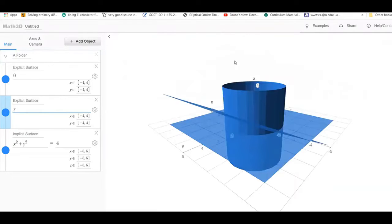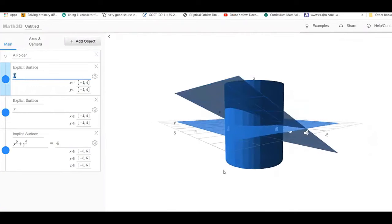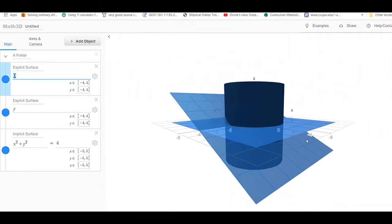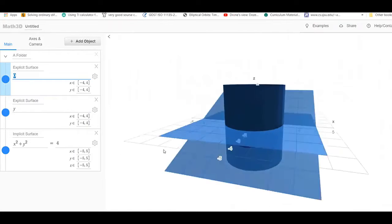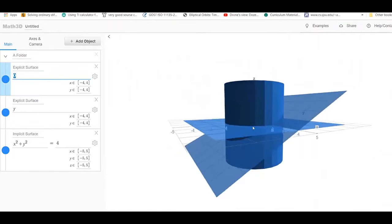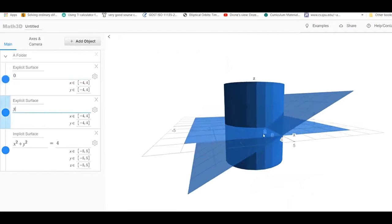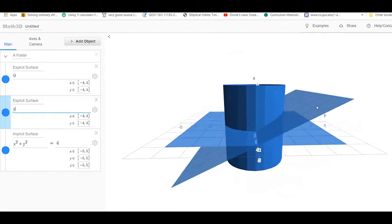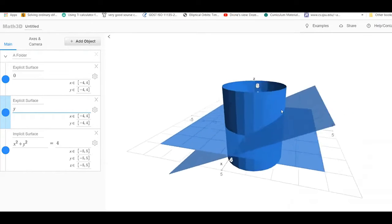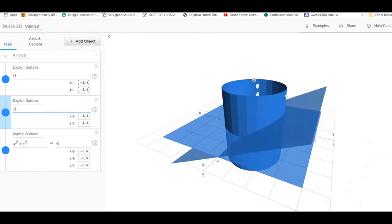So, here we have z equal to 0, which is nothing but your xy-plane, and z is equal to y. As you can see, here you have this plane z equals to y that cuts through the cylinder. And this is your cylinder here.